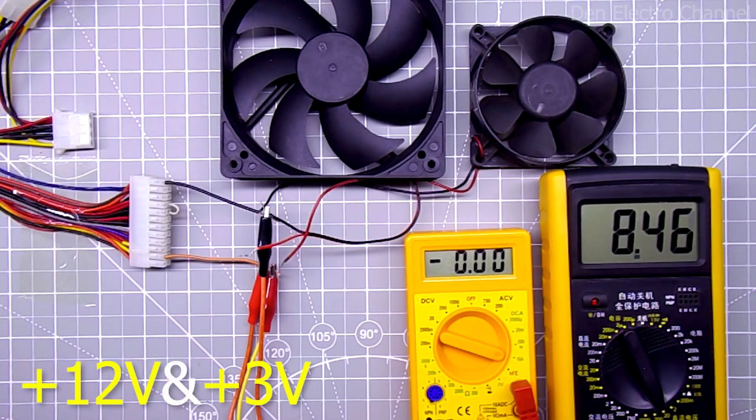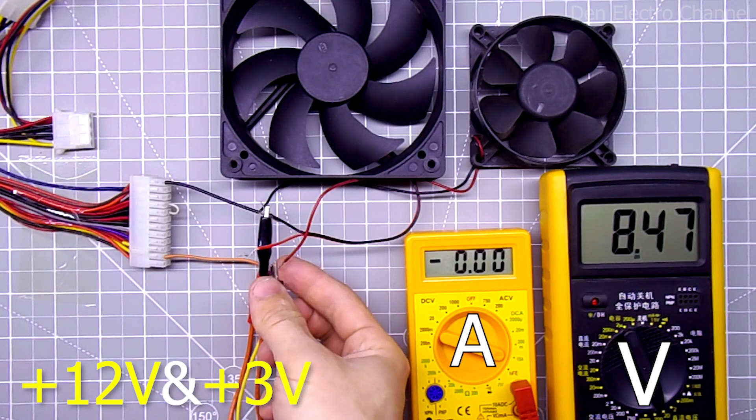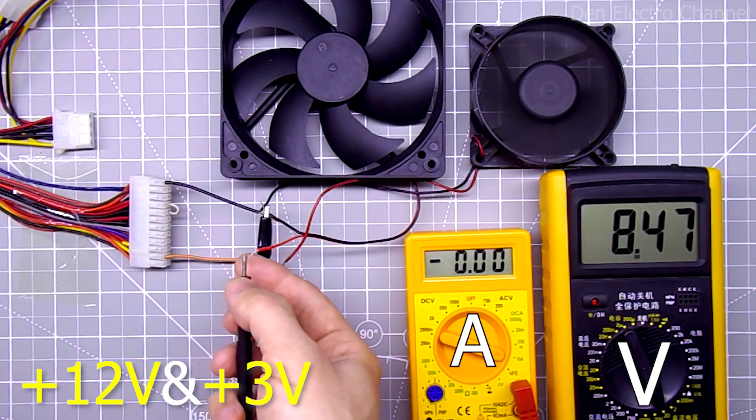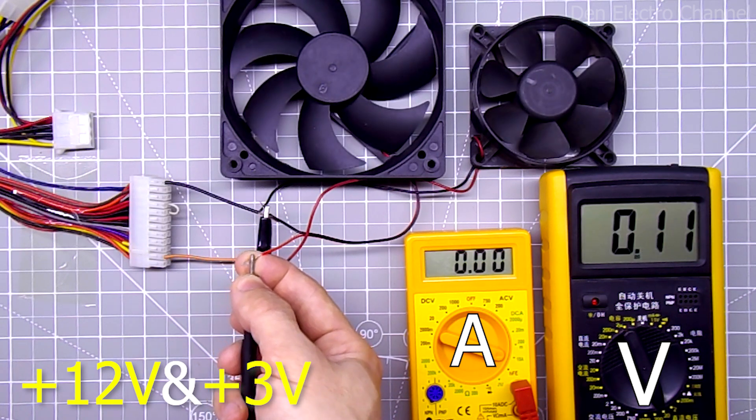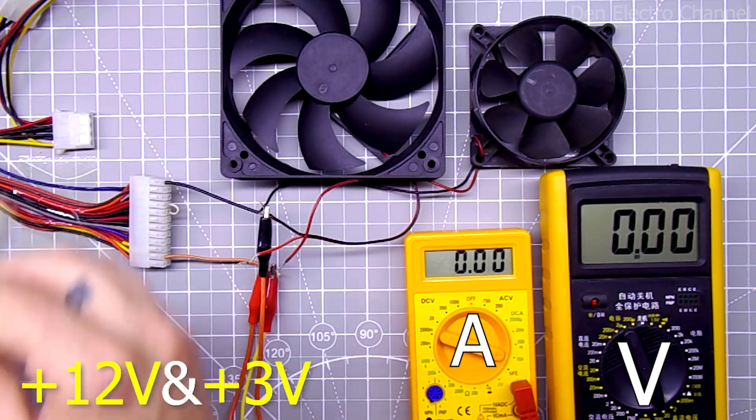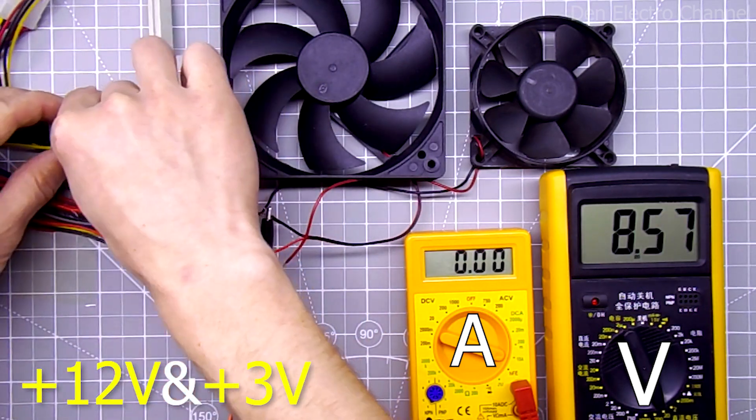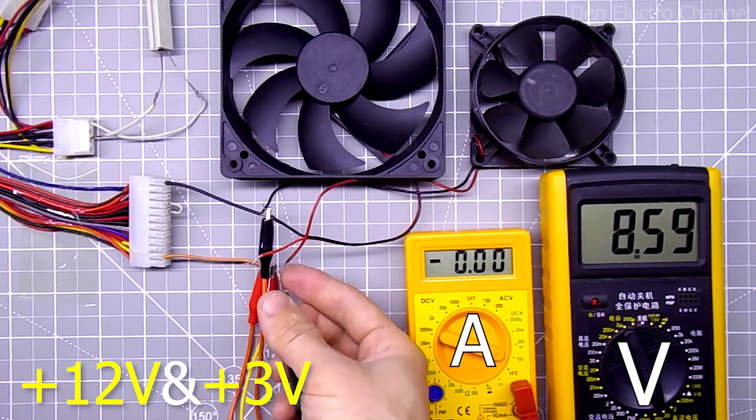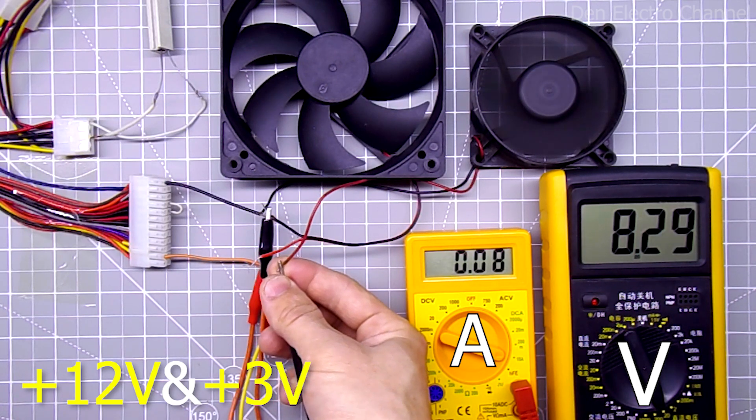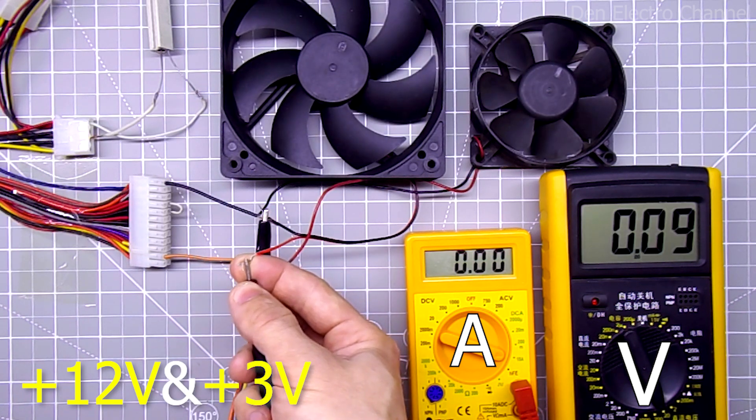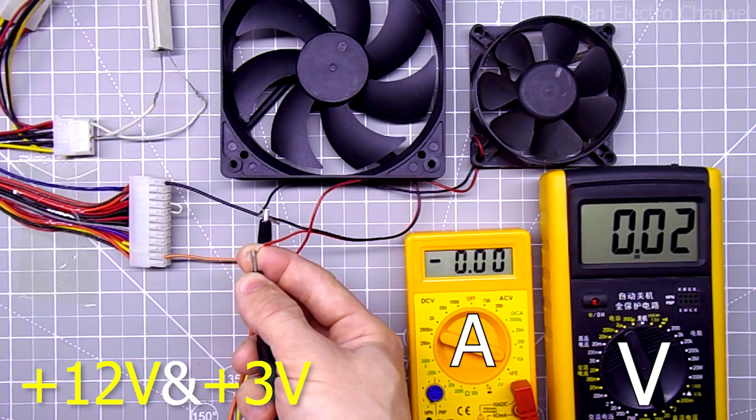Now let's see what happens between the plus 12 and plus 3 volt lines. The voltage between them is about 8.5 volts. I connect a small fan. The voltage dropped by 10 millivolts. The current is 70 milliamps. I disconnect it and try to connect a large fan. The power supply turns off again. I connect a resistor to the 5 volt line and restart the power supply. The voltage increased by about 15 millivolts. But after connecting the fan, it sags more than before. I disconnect the small fan. Connect the large one and the power supply turns off.